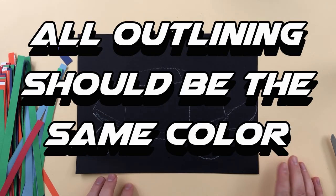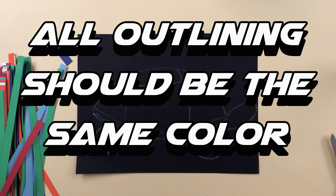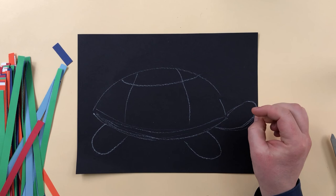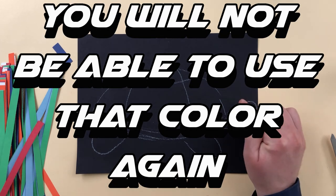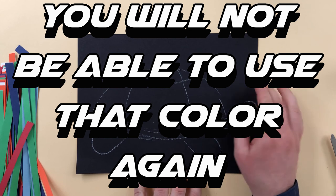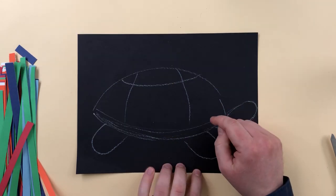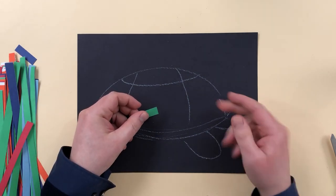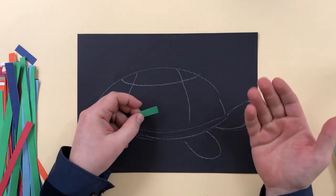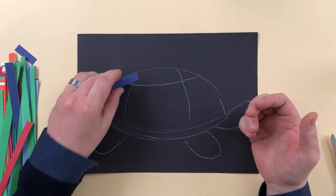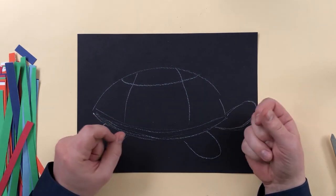Everything you did in pencil all needs to be gone over with the same exact color. That color cannot show up anywhere else. So if this is a turtle and I want it to be green on the inside here, I would not want to use green for the outline because I wouldn't be able to use the outline color again. Another thing is if it's in the ocean, I wouldn't want to use blue to outline it because then I can't use blue out here.